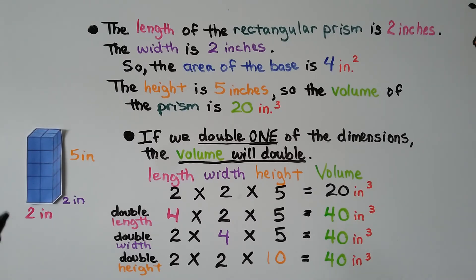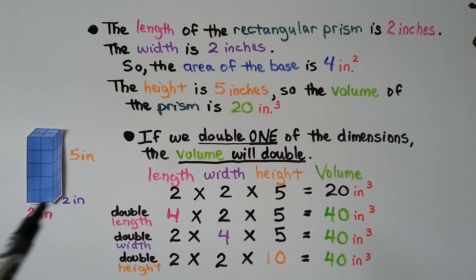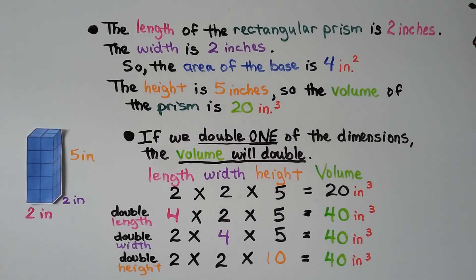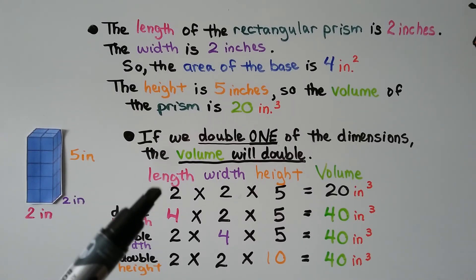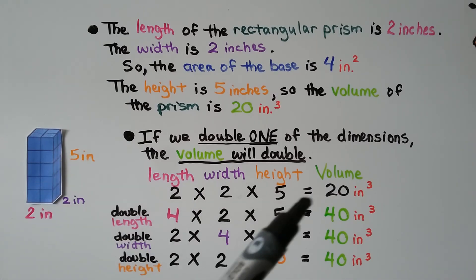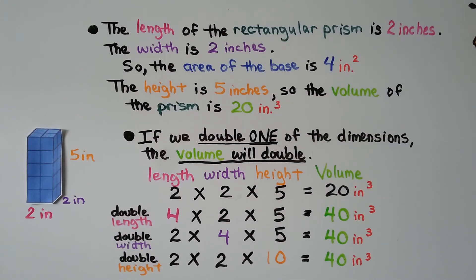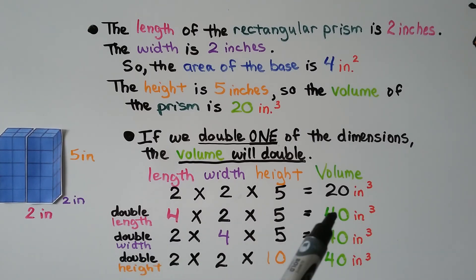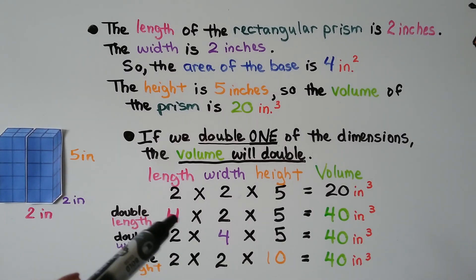The length of this rectangular prism is 2 inches, the width is 2 inches, so the base area is 4 inches squared. The height is 5 inches, so the volume is 20 inches cubed. If we double one dimension — say the length to 4 inches — we now have 4 times 2 times 5, that's 8 times 5, which is 40 inches cubed. The volume doubled when we doubled the length.